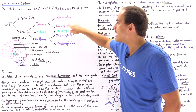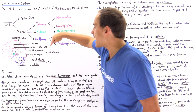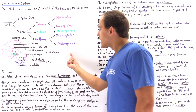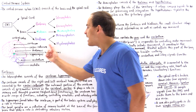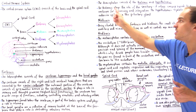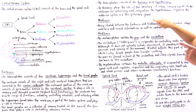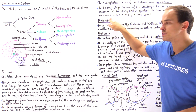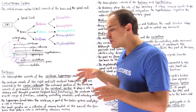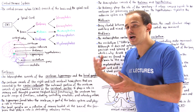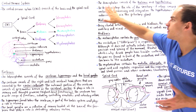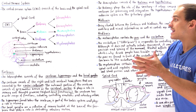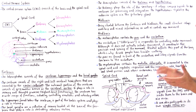Moving on to the diencephalon of the forebrain, which contains the thalamus and the hypothalamus. The hypothalamus is the control center of the endocrine system because it controls the pituitary gland, the master gland of the endocrine system. The thalamus acts like the secretary of our cerebrum — it relays sensory and motor signals to and from the cerebrum, where that information is then processed and integrated.